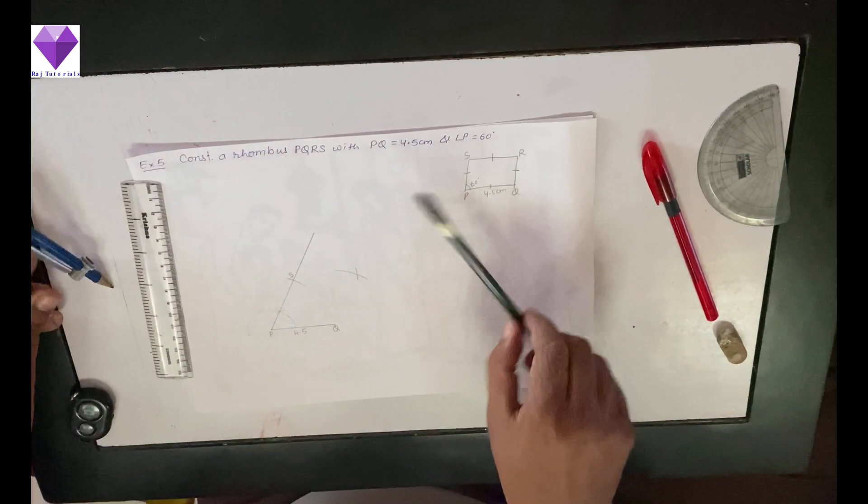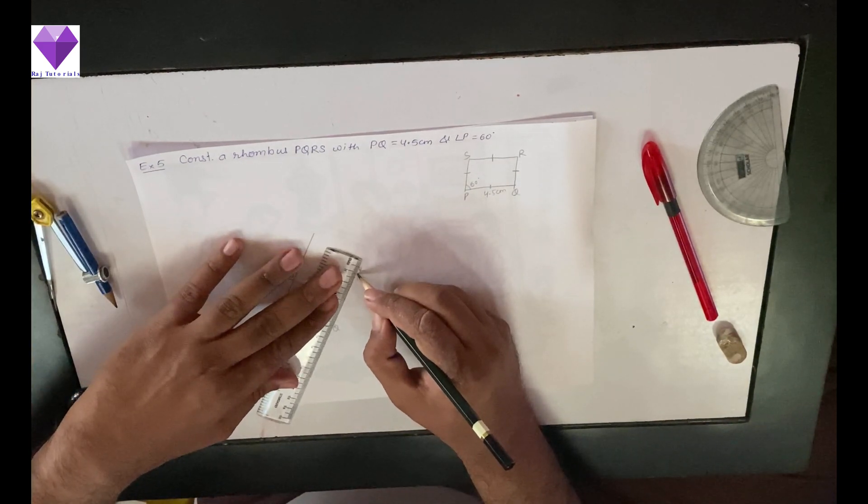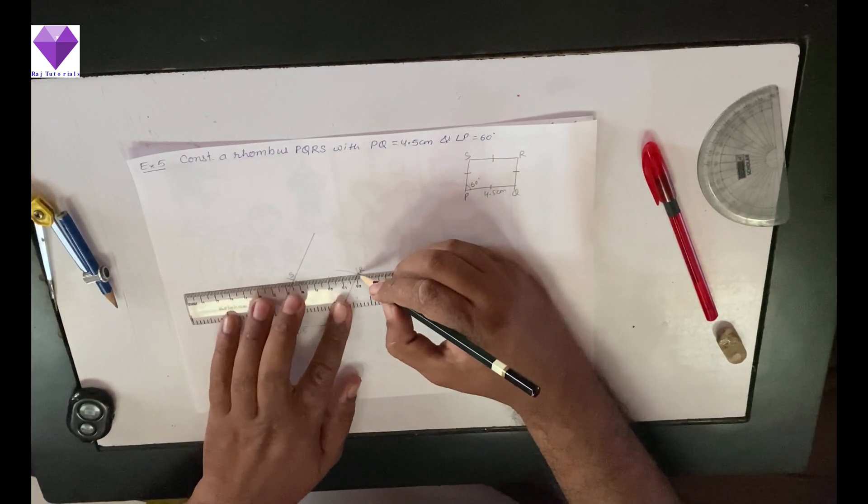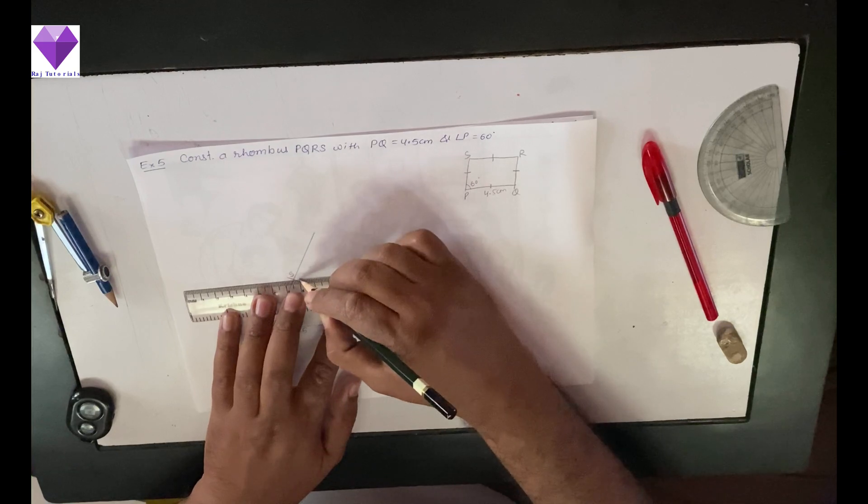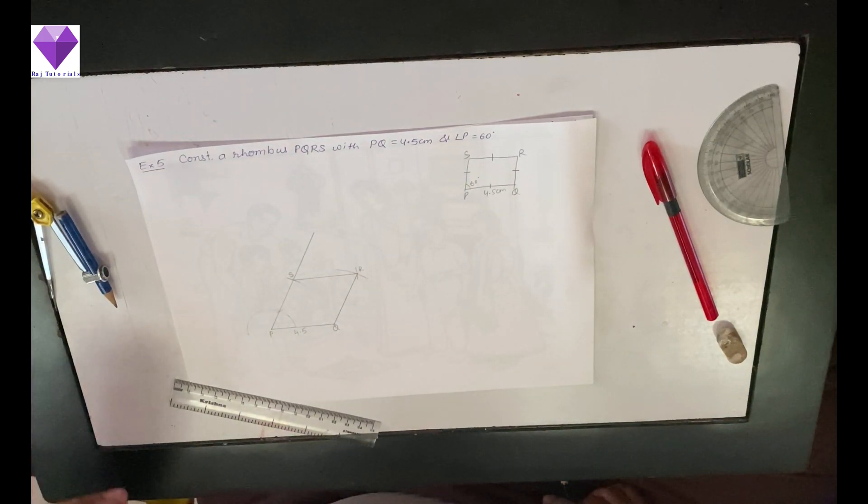So I got this R point. Now joining the points, this is my required rhombus. Thank you.